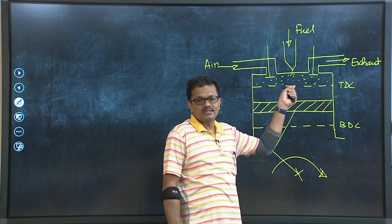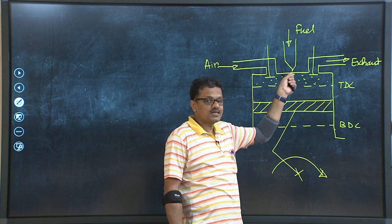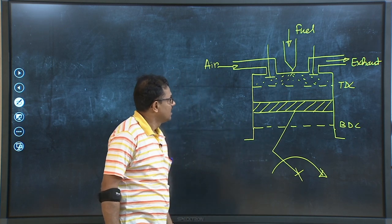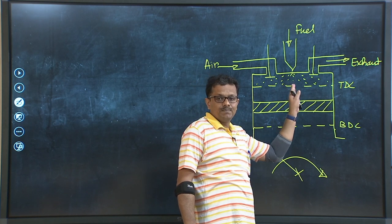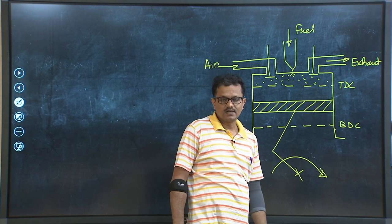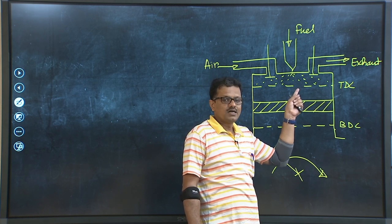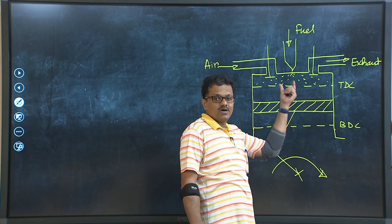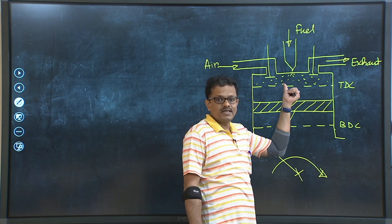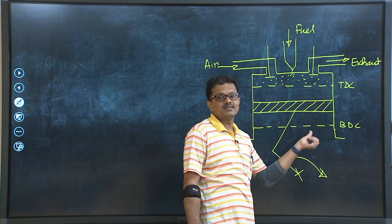When the piston is about to reach TDC during the end of the compression stroke, both valves are closed. Fuel is injected into the cylinder in the form of a spray. When the piston is at TDC or a little away from TDC in the next stroke, entire combustion is completed. Because of the rise in pressure and temperature of the working substance, the thrust applied on the piston face is the responsible force for the movement of the piston from TDC to BDC — that is the power stroke.